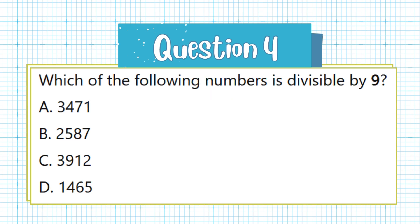Question 4. Which of the following numbers is divisible by 9? a. 3471, b. 2587, c. 3912, d. 1465.